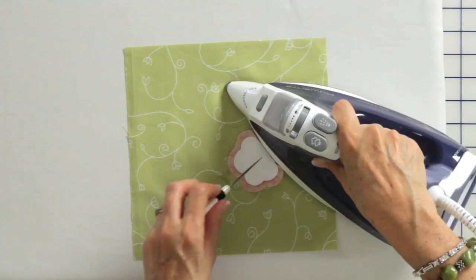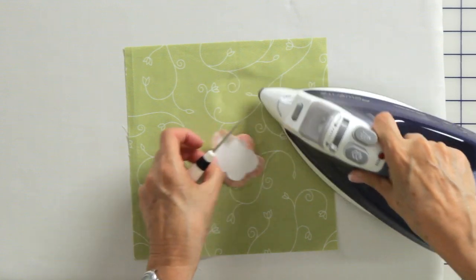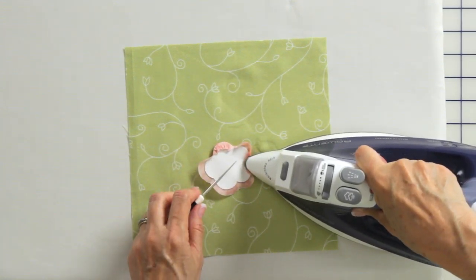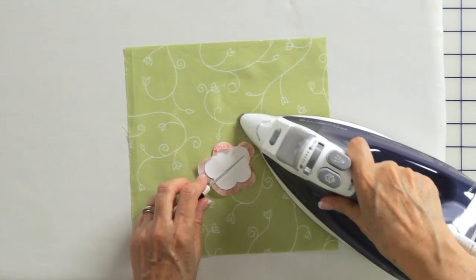You just kind of let that iron sit so that starch just dries. I've got that tacked down and then I'm going to push the extra fabric over the petal around the round shape.